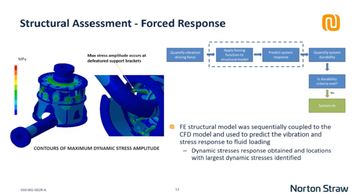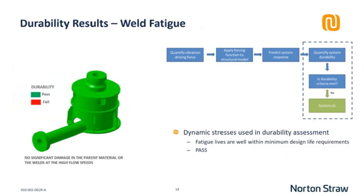To accurately capture these effects, we used scale-resolving turbulence models where the large energy-containing eddies are explicitly simulated — these are the primary drivers of the force fluctuations. The resulting unsteady pressure fluctuations on the walls of the spool represent the forcing function generated. The dynamic forces were extracted and applied to a structural FE model of the spool and receiver bucket. As the system was in service and redesign was not an option, the goal was to carry out a forced response analysis, obtain the vibration and dynamic stress response, and assess critical locations such as the stiffener rib weld locations on the receiver bucket.